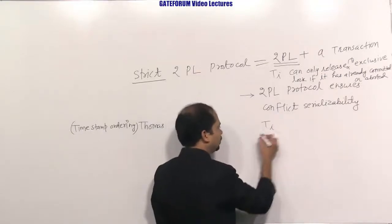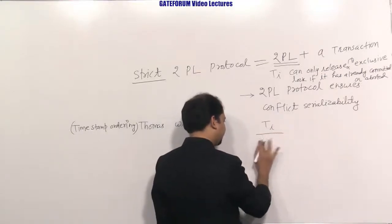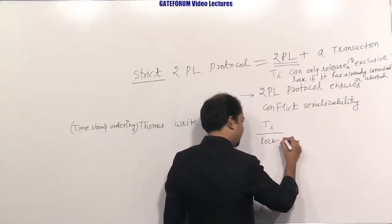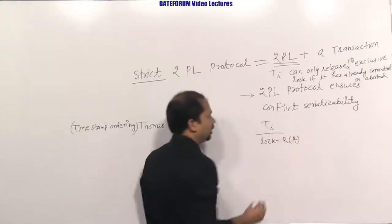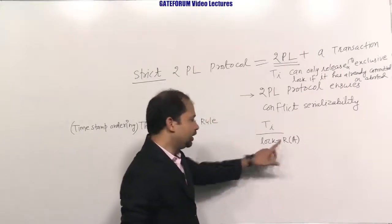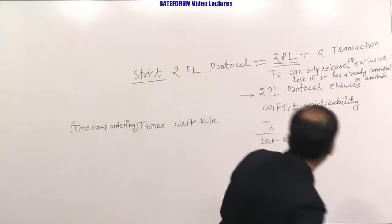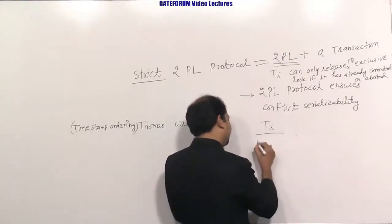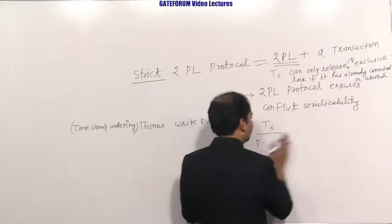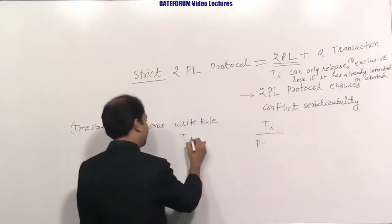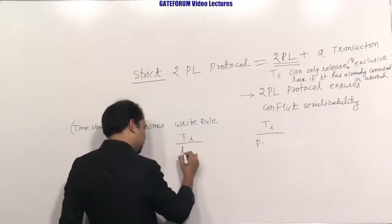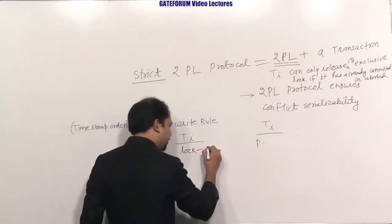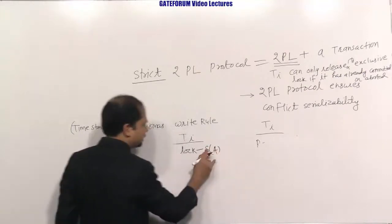Strict two-phase locking equals two-phase locking plus: a transaction Ti can only release its exclusive lock if it has already committed or aborted. For example, Ti asks for a shared lock S on A and an exclusive lock X on B. If the manager grants them, Ti can unlock A (shared lock), then commit, and then unlock B (exclusive lock). Ti must commit or abort before releasing the exclusive lock.